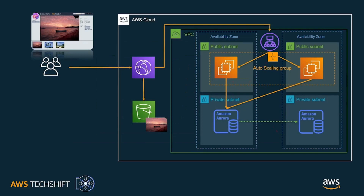The photo gallery application architecture now offers scalability and provides increased resilience and performance. However, there are more components than the original single EC2 instance. Setting up this architecture from scratch manually, either through the console or via the CLI, can be time consuming, and creating multiple identical deployments of the same environment could be challenging.